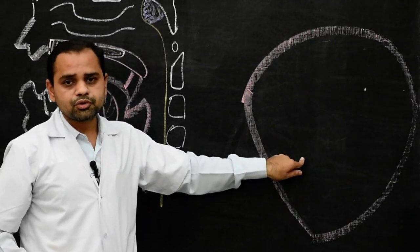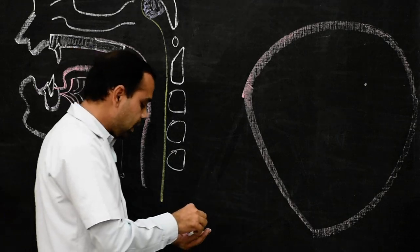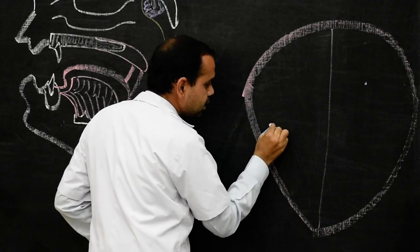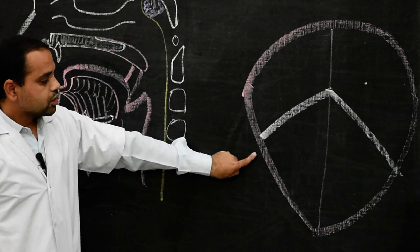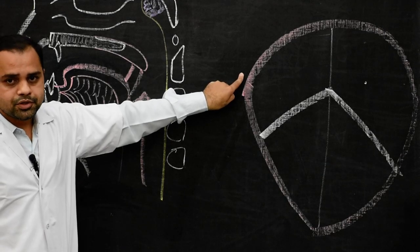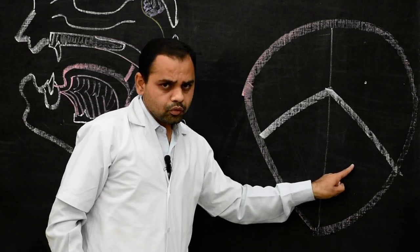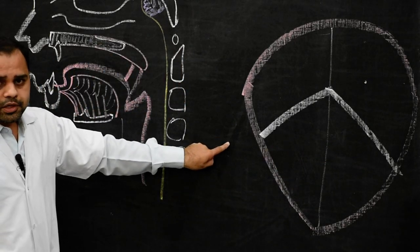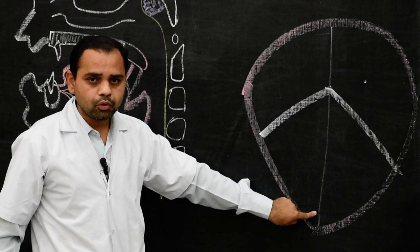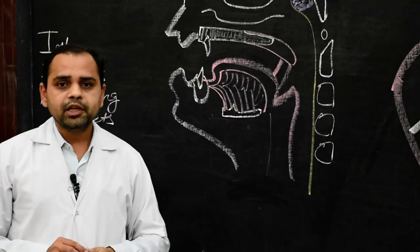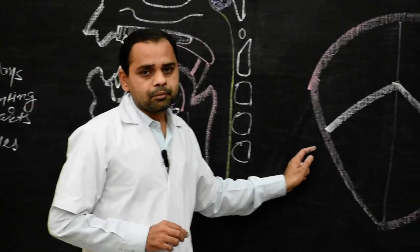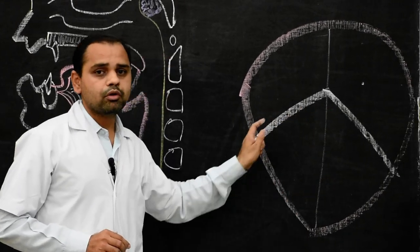The upper surface is known as the dorsal surface and the lower surface is known as the ventral surface. This diagram shows the dorsal surface of the tongue. The dorsal surface is divided by a V-shaped sulcus into two parts: the anterior two-thirds is known as the oral part, and the posterior one-third is known as the pharyngeal part, which lies in the anterior wall of the oropharynx. The oral part of the dorsum of the tongue presents the following features: in the center there is a median furrow. This part of the tongue is moist and has a velvety appearance because of the presence of papillae.